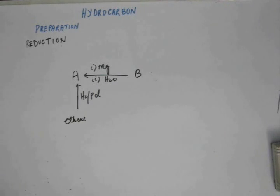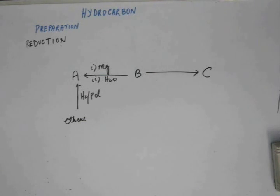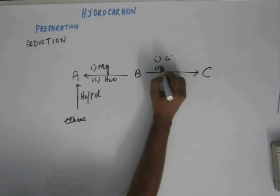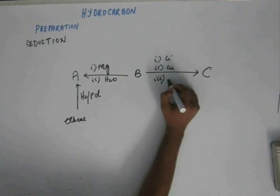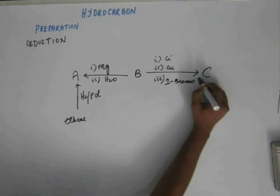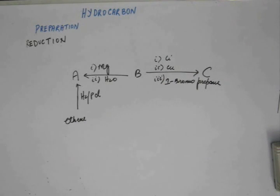Now, B gives you C. B gives you C when first you add lithium, second you add copper, and third you add 1-bromopropane. So what you have to do is you have to find out what are ABC.